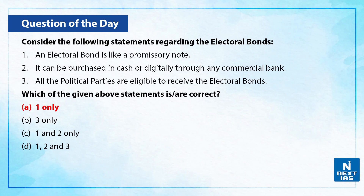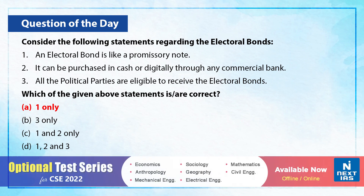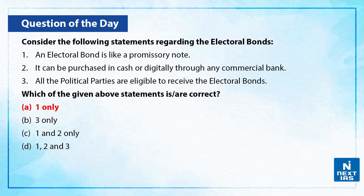The correct answer is A — that is, only the first statement is correct: an electoral bond is like a promissory note. The second statement is wrong, as it cannot be purchased in cash or digitally through any commercial bank — there are specialized banks for this. The third statement is also wrong, as not all political parties are eligible to receive the electoral bonds and there is a defined criteria for this. Therefore, the correct answer is option A only.